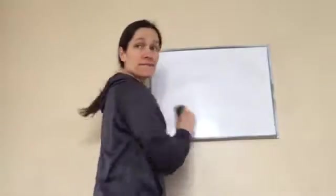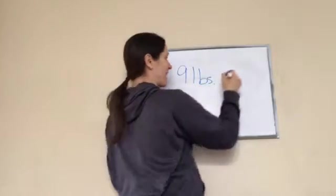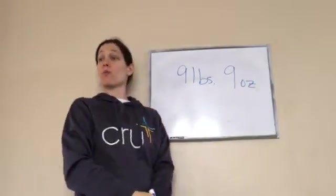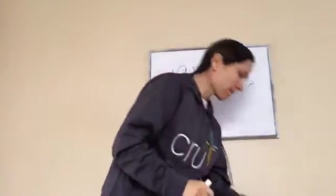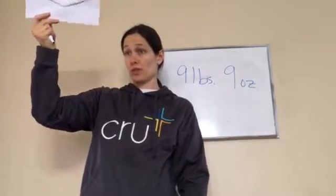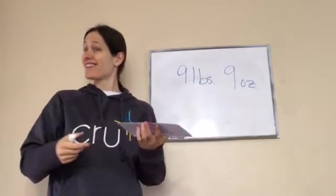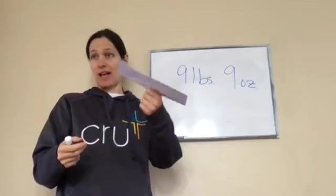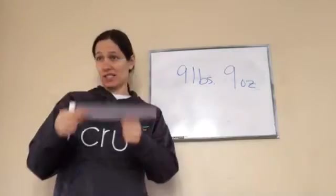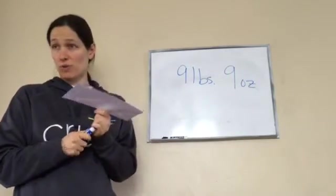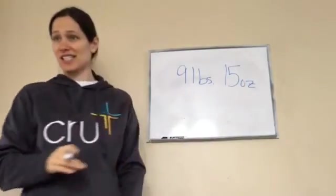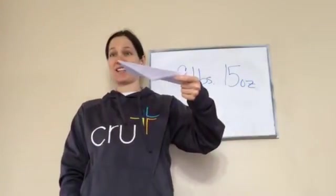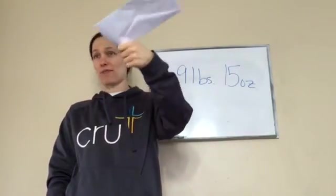When you were born, you weighed 9 pounds 9 ounces — only 7 ounces away from 10 pounds, so you were just 7 envelopes short of 10 pounds. Your brother was 9 pounds 15 ounces — only 1 ounce away from 10 pounds, just 1 envelope less. Not that much of a difference really. Okay, that is lesson 102!